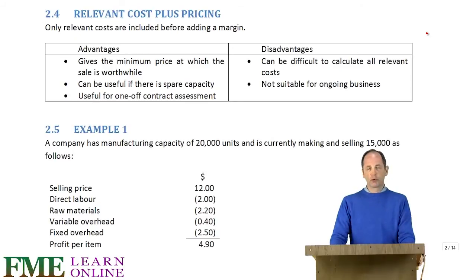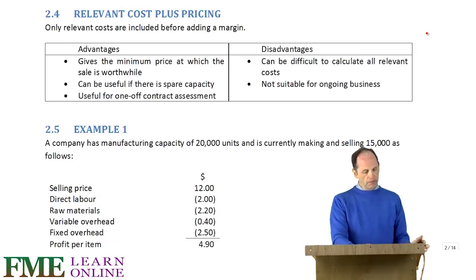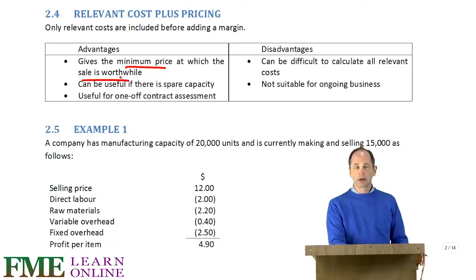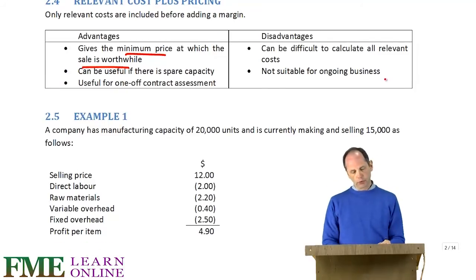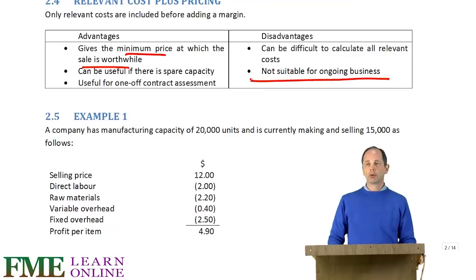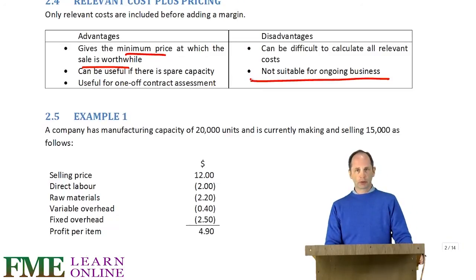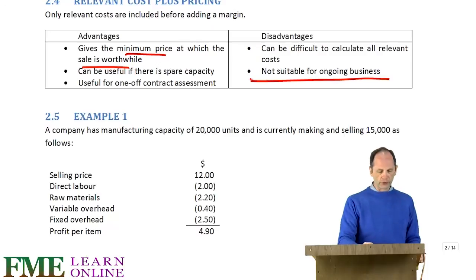We could also go for relevant cost pricing, which is much more like short-term decision making. That gives the minimum price at which it's worthwhile undertaking a contract — looking at the extra cost of material, labour, and so on that we'll incur. However, it wouldn't be suitable for most general ongoing business; it's only really suitable if you've got a particular extra contract that has been offered to you.